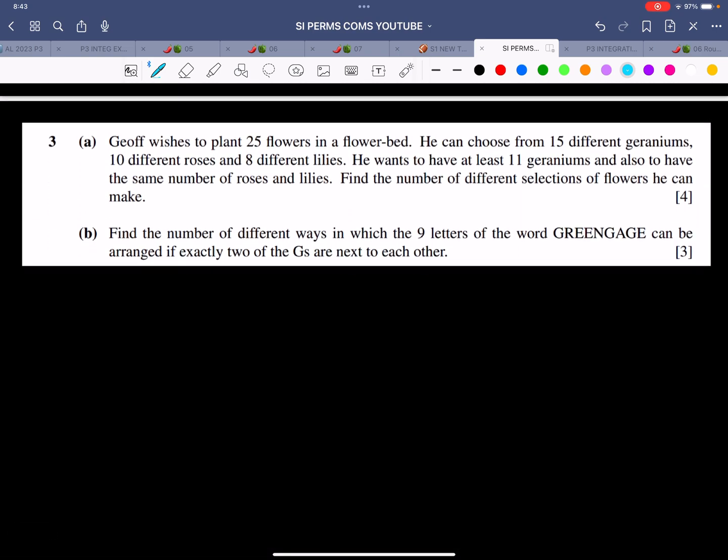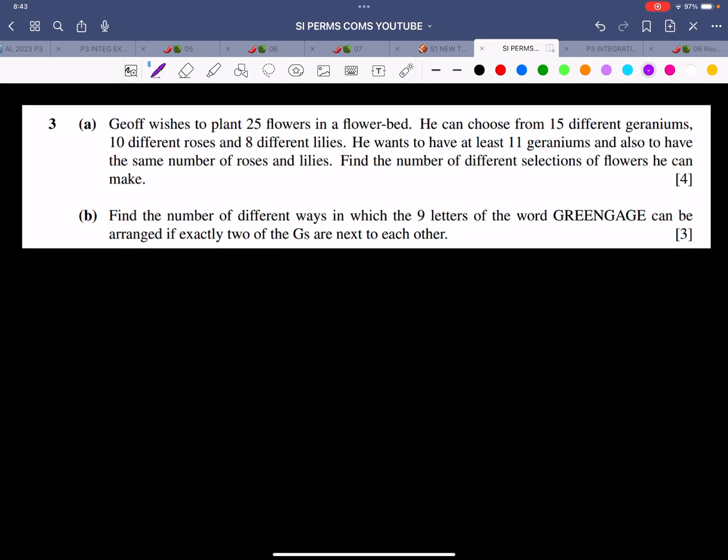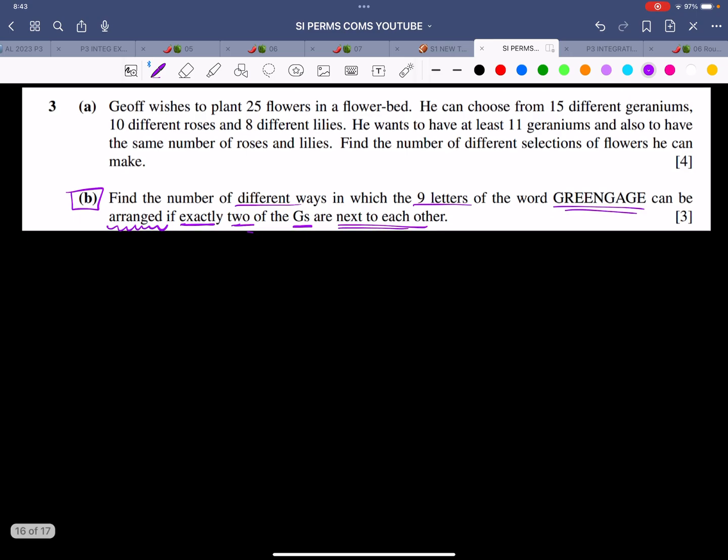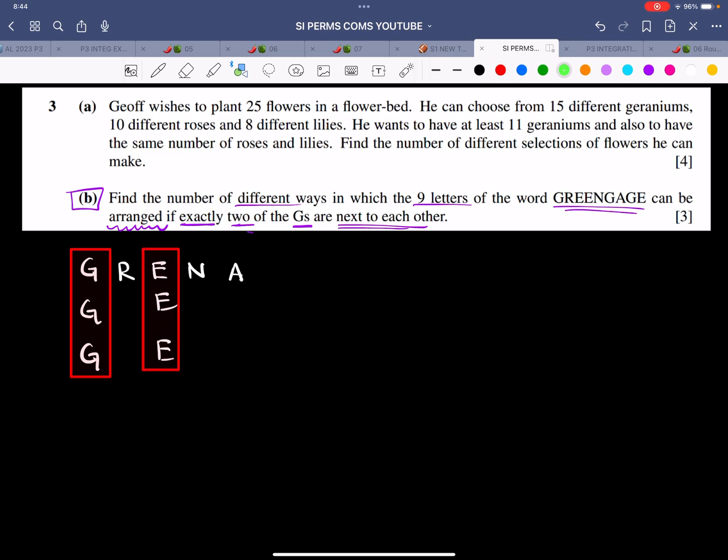Let's move to the second part. In the second part, let's read it. Find the number of different ways in which 9 letters of the word GREENGAGE can be arranged if exactly two of the G's are next to each other. Let me write it down: G, R, double E, N, G, A, G, E. What do we have? We have three G's, three E's, and then we have an R, an N, and an A. That's nine letters.